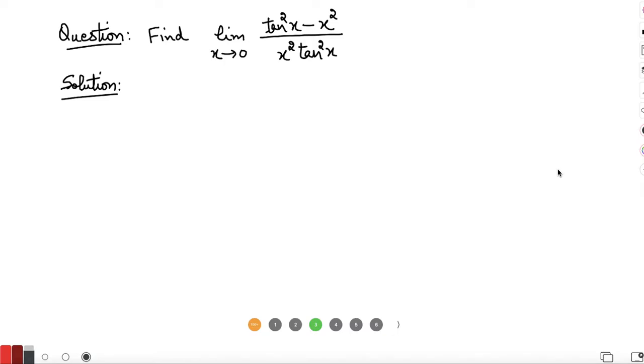Hello everyone, today we are going to solve a limit question. Find the limit as x tends to 0 for the function tangent squared x minus x squared over x squared tan squared x.